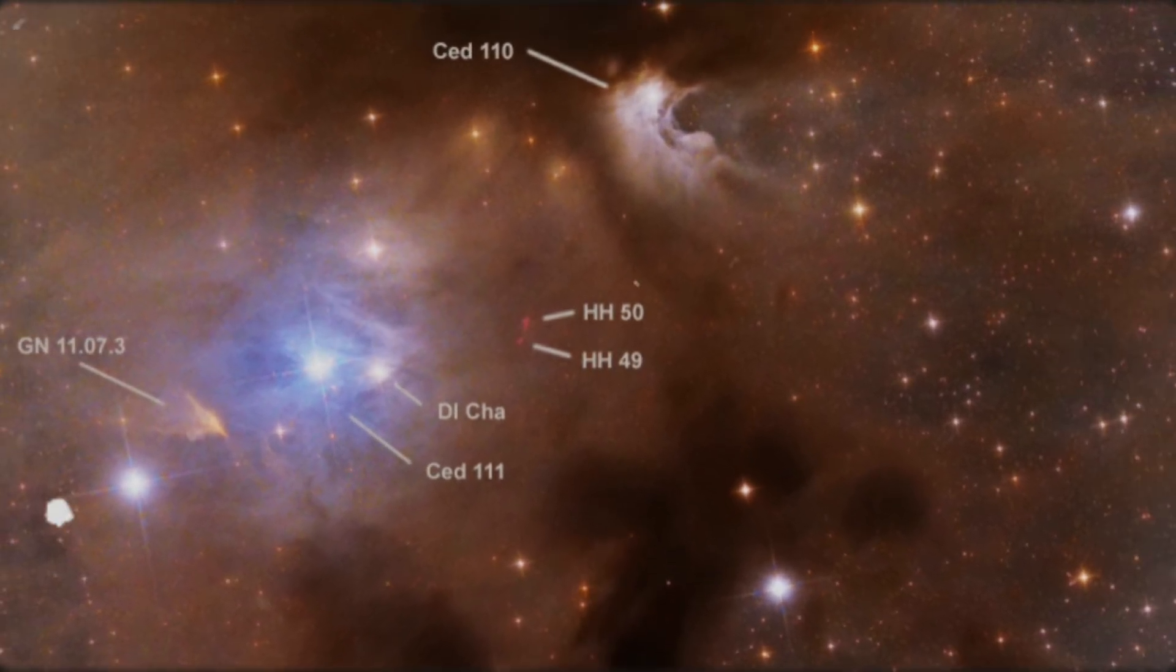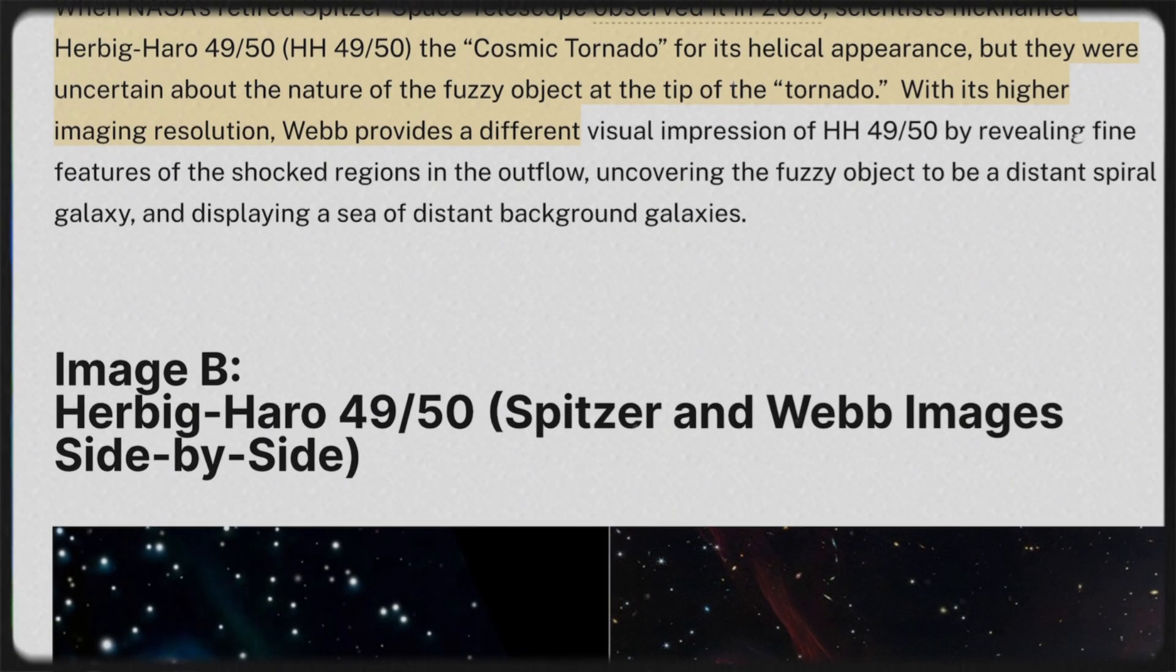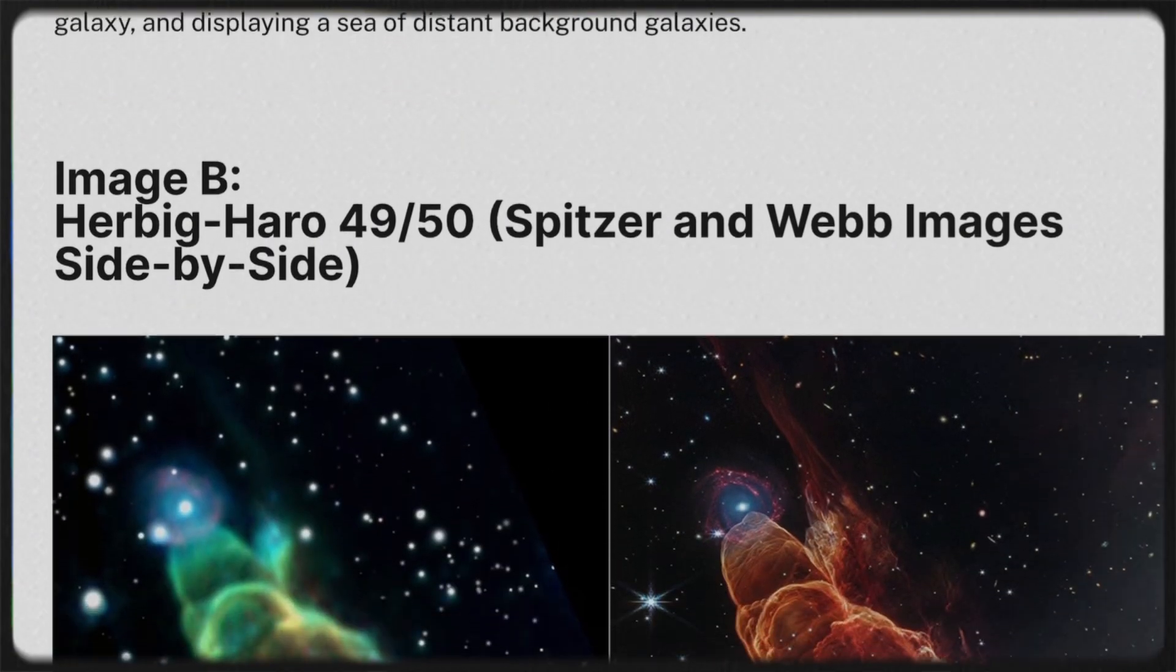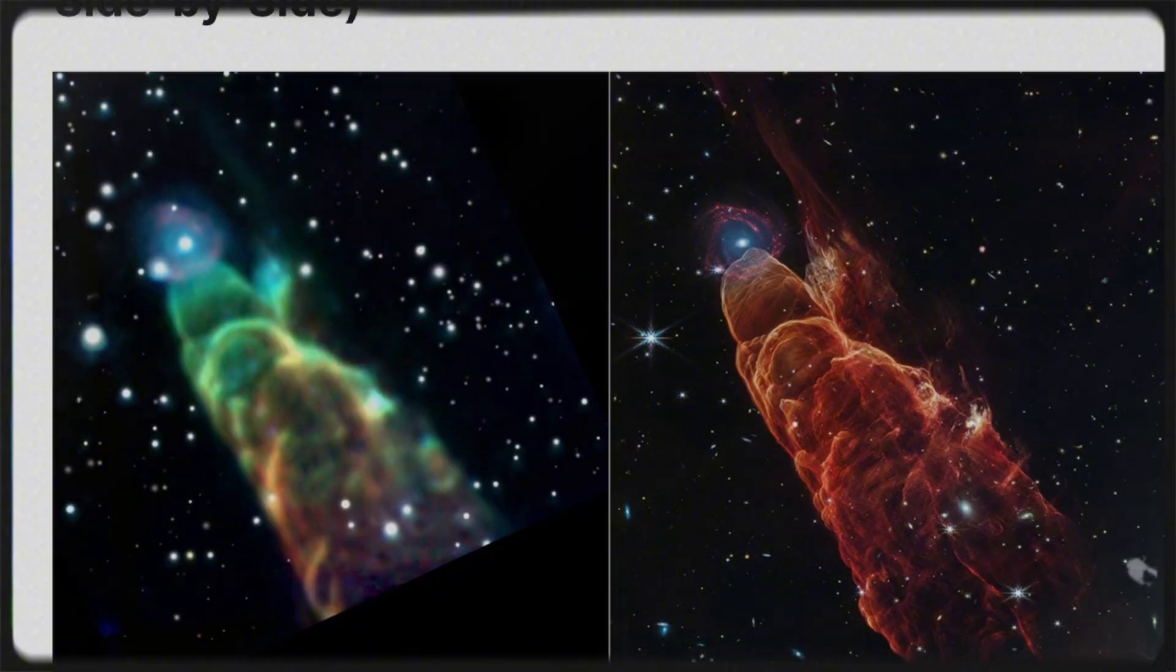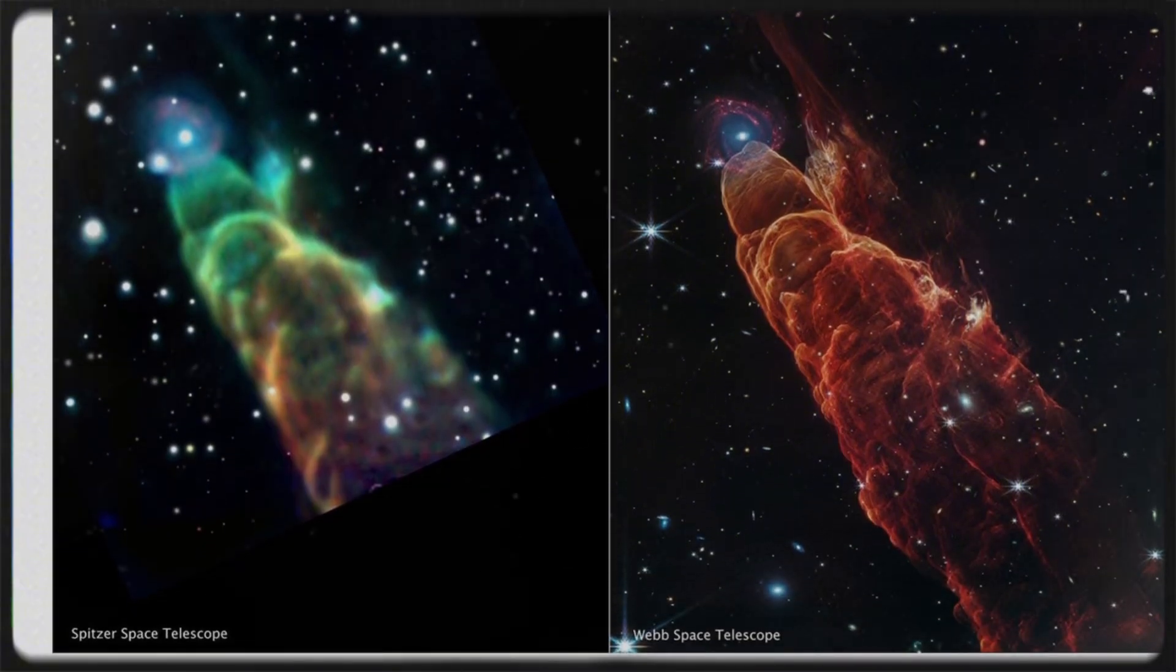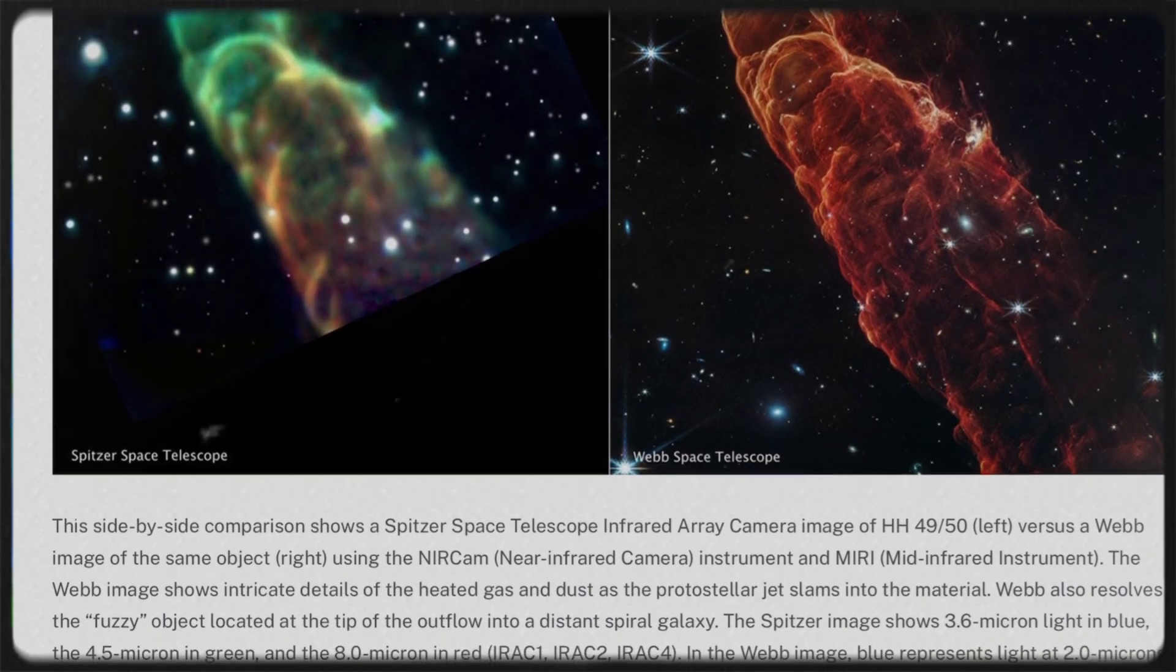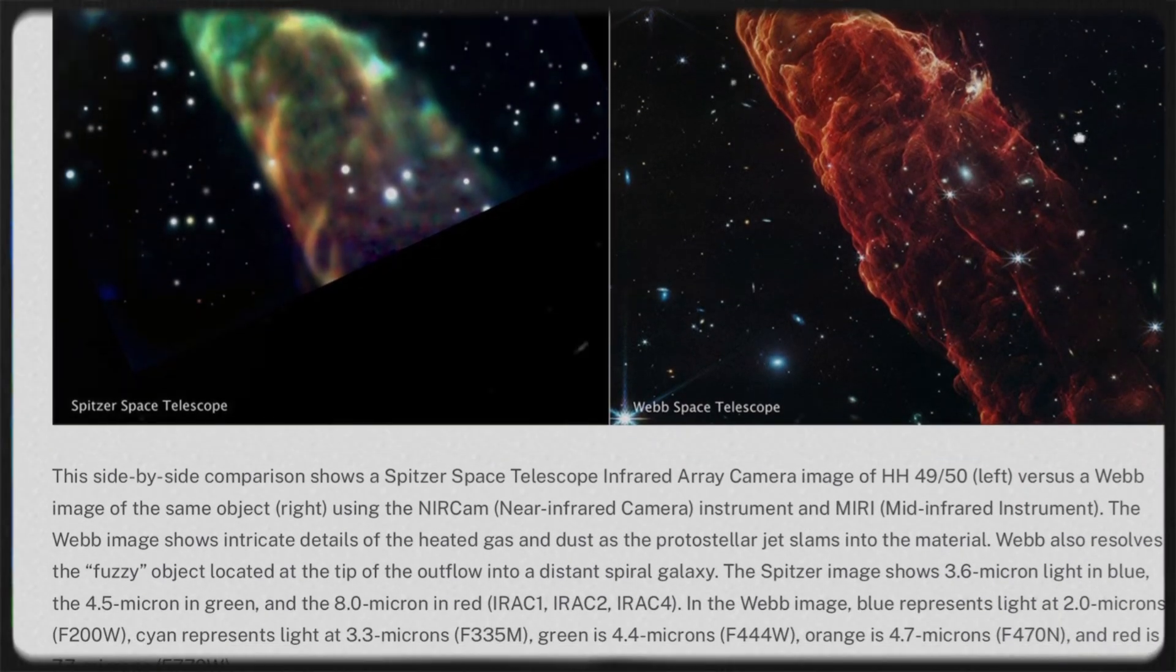Now, here's a twist. Back in 2006, this very same object was nicknamed the Cosmic Tornado when it was first seen by NASA's now-retired Spitzer Space Telescope. Its swirling, helical shape made it look like a space-borne twister spiraling through the cosmos. But there was a lingering mystery. A fuzzy object appeared to be clinging to the tip of this cosmic tornado. What was it?